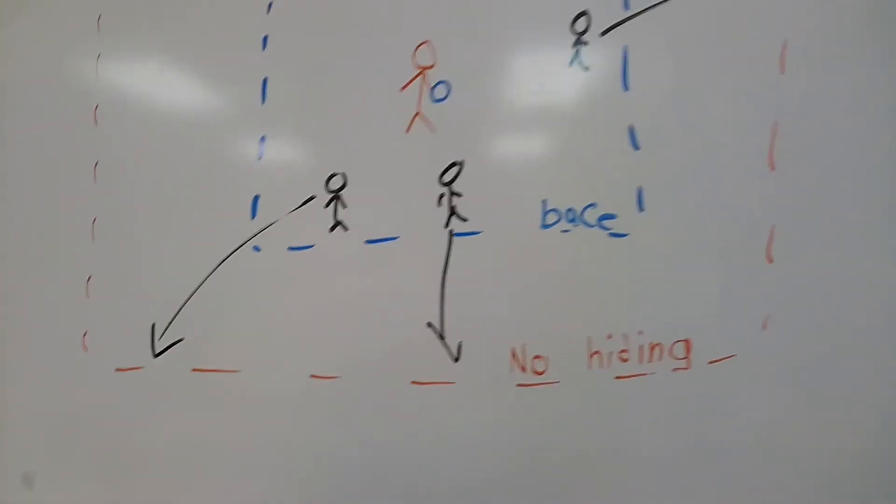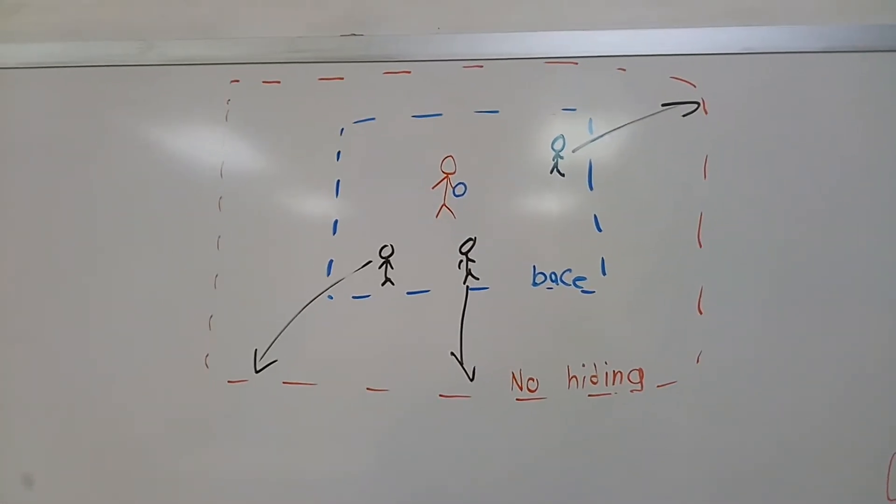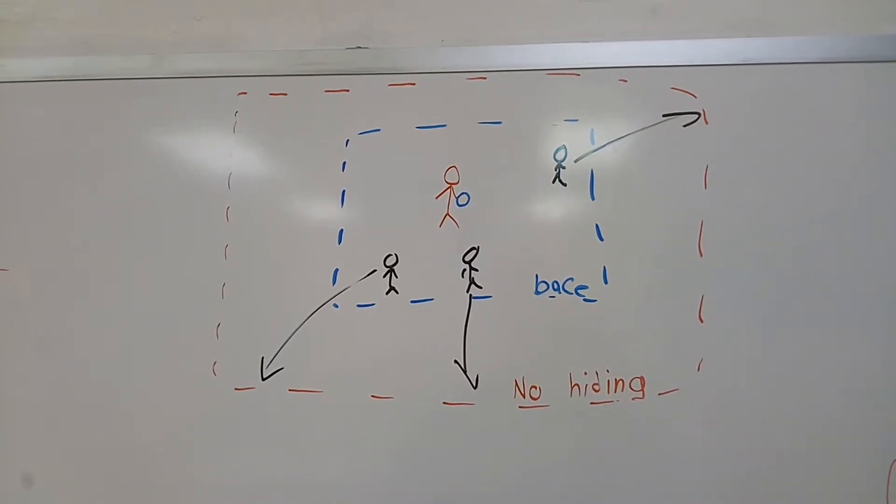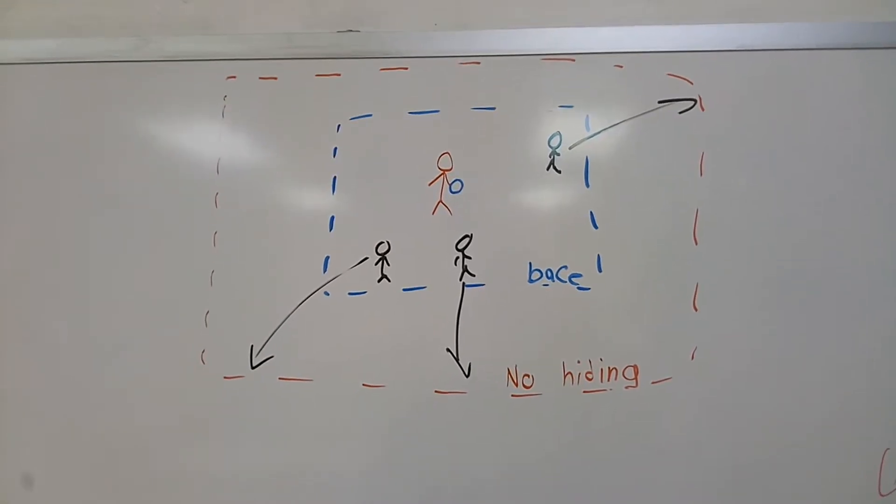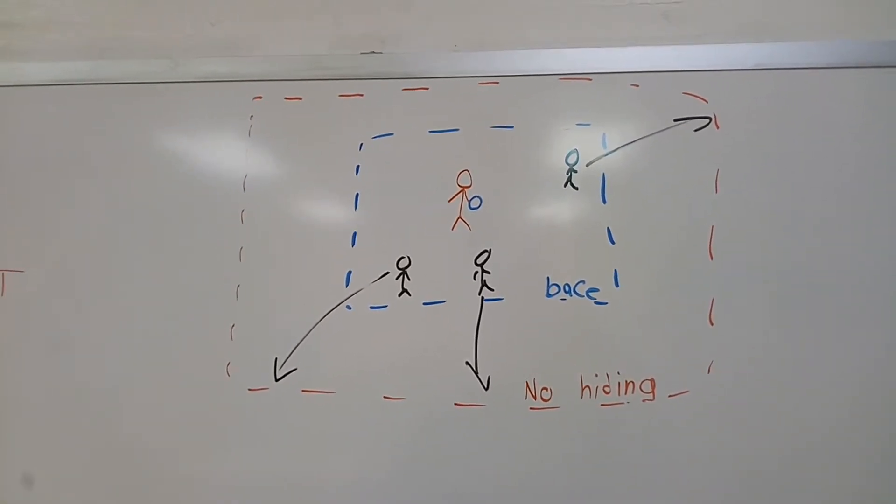So you see the red person in the middle, he's it, he's counting. Everyone that's black is not it. They run and hide. You can't hide right next to base, you've got to hide.